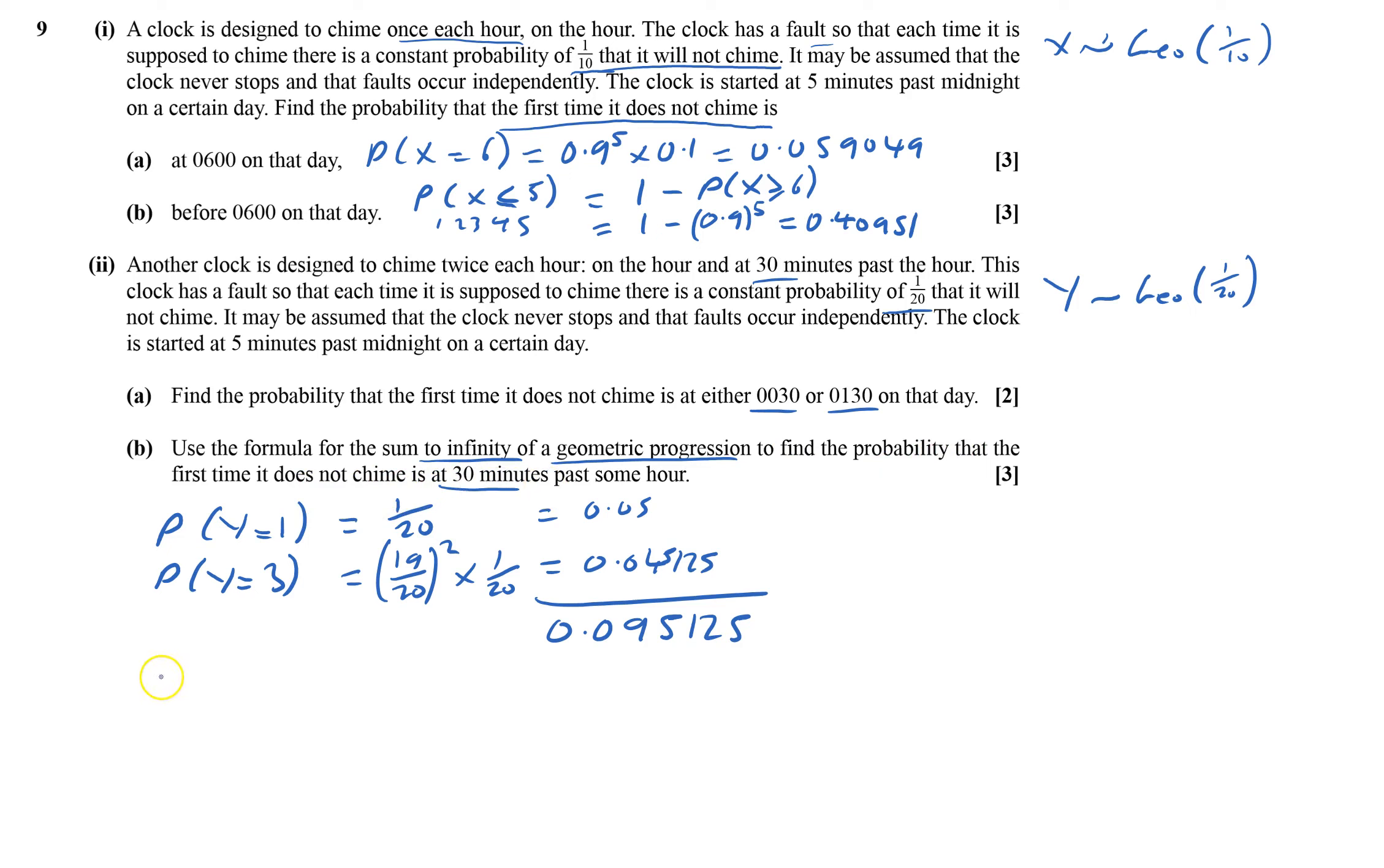Probability Y equals 5 will equal one-twentieth times 19 twentieths to the power of 4. Probability Y equals 7 equals one-twentieth times 19 twentieths to the power of 6. The first term a is one-twentieth, and the common ratio is 19 twentieths squared, which equals 0.9025. Sum to infinity equals a over 1 minus r, which equals one-twentieth over 1 minus 0.9025, which equals 20 over 39.